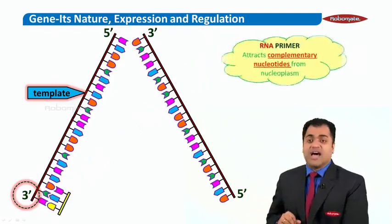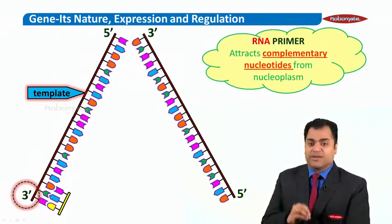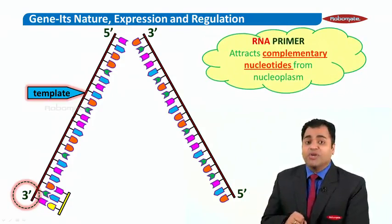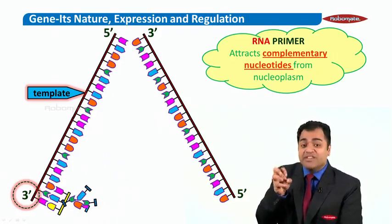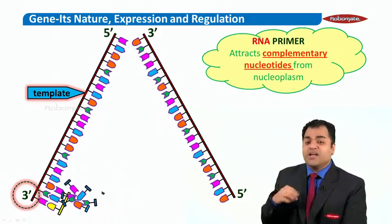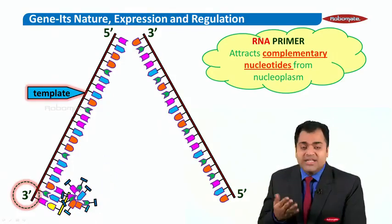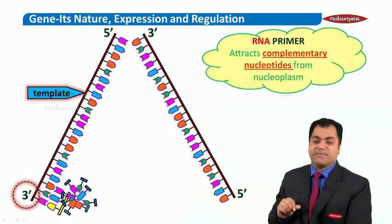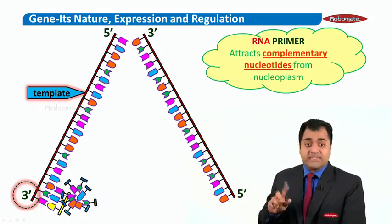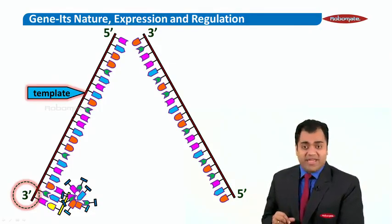Now, these primers are known to attract complementary nucleotides from the nucleoplasm. Let us see how it would do that. Look at there. What do you see? It is attracting complementary nucleotides from the nucleoplasm. And they should be complementary to the bases on the template strand. But now, it requires another enzyme to build that new strand. Let us see what that enzyme is.